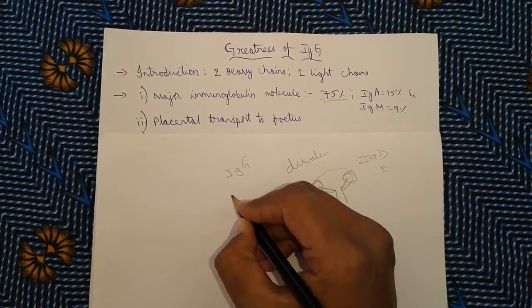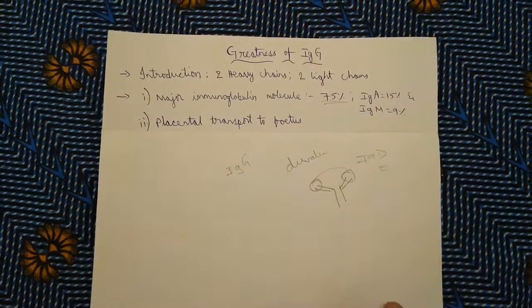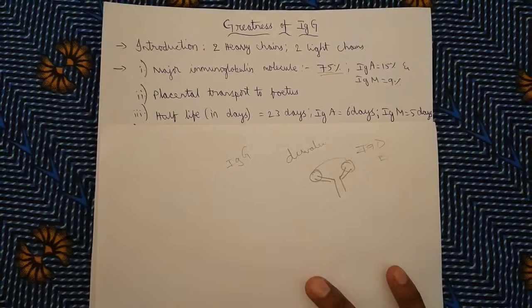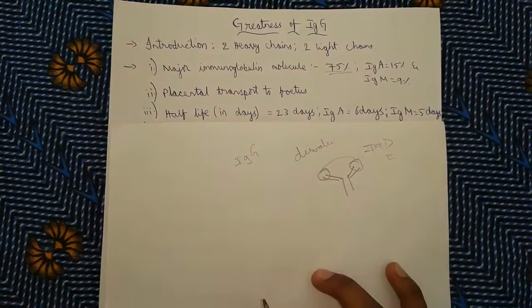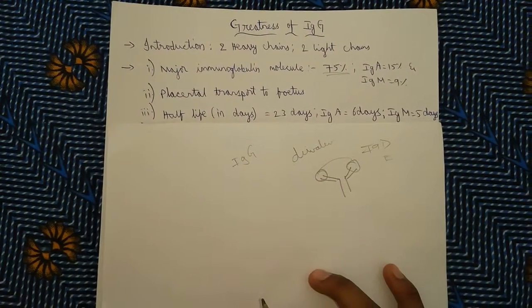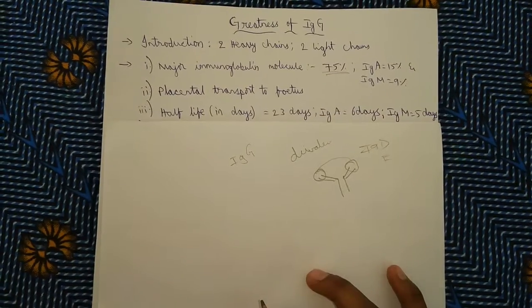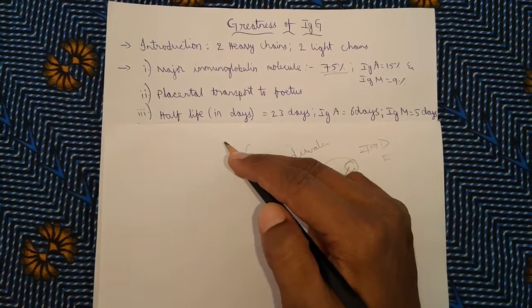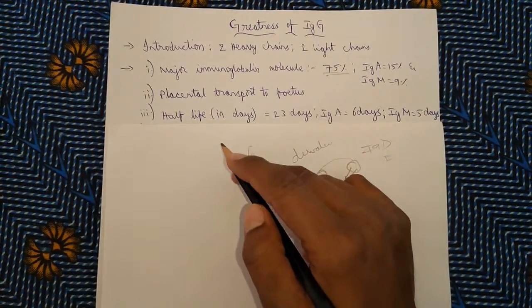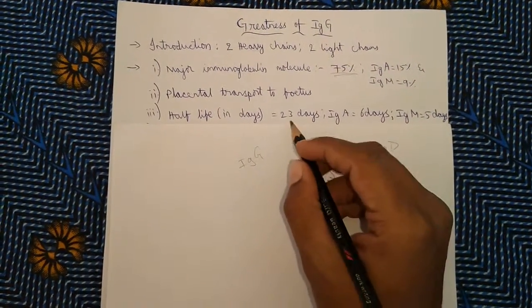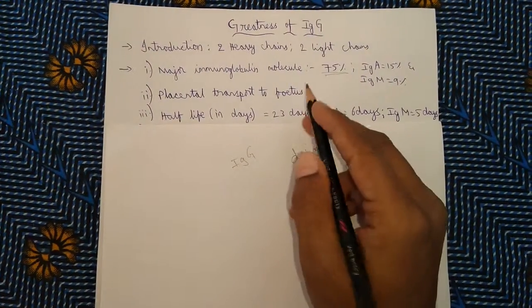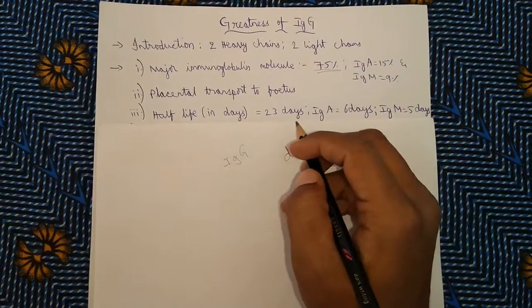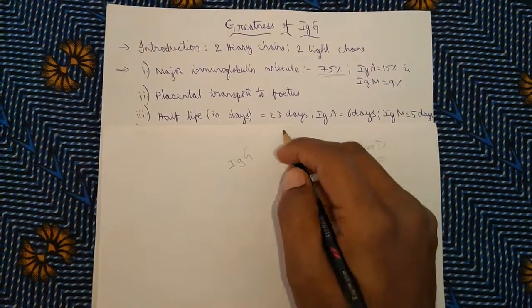The third important characteristic is half-life. Immunoglobulin G has the highest half-life among all the immunoglobulins. What is half-life? The time taken by half of the antibodies to get disappeared is called as half-life. IgG molecule has a high half-life—it is 23 days. It can exist up to 23 days and can give more immunity power.